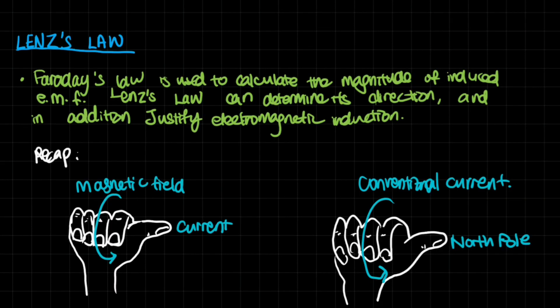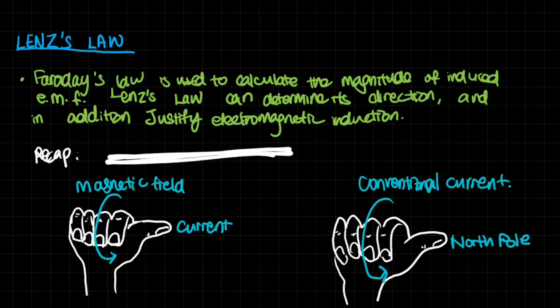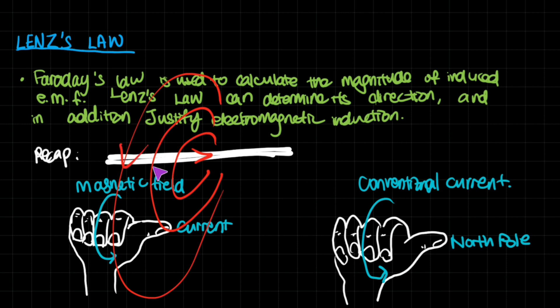Now that we're done with that, let's take a look at Lenz's law. Faraday's law calculated the magnitude of the induced EMF; Lenz's law determines its direction and justifies electromagnetic induction. I want to recap the right-hand rule. Take your right hand as if gripping a pencil — the thumb points in the direction of conventional current, and the curled fingers represent the direction of the induced magnetic field around the wire.